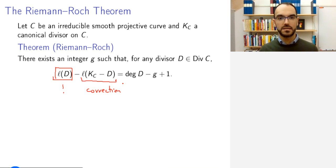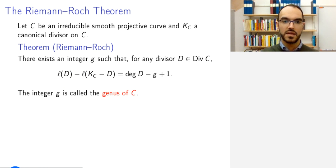Historically, Riemann himself proved that ℓ(D) is at least this right-hand side in the setting where he was working. And Roch's contribution, Roch, who was a student of Riemann's, contributed this correction term. And the integer g is called the genus of C. And this is how we define the genus in this algebra-geometric setting.